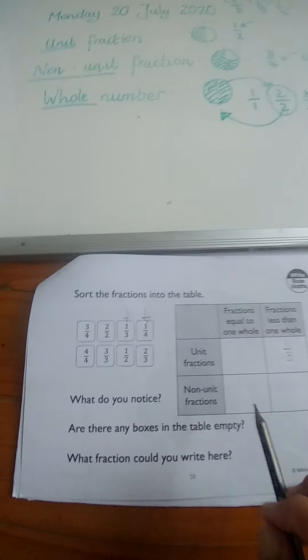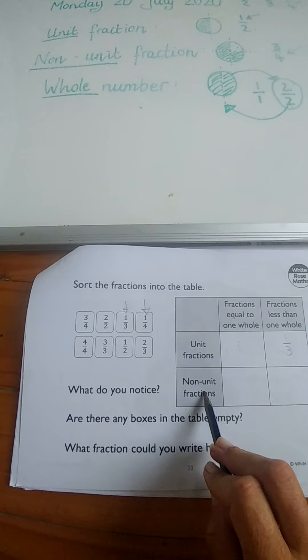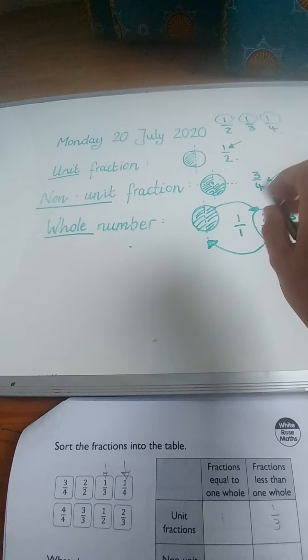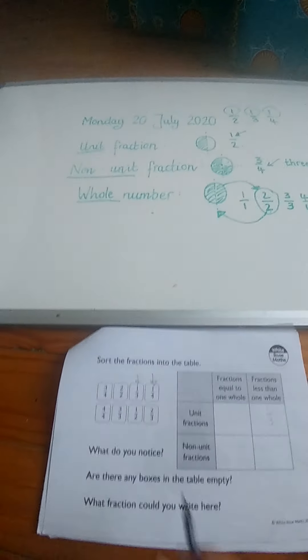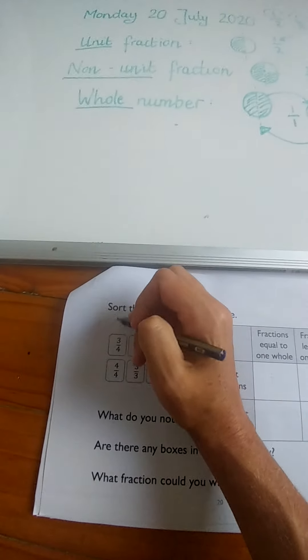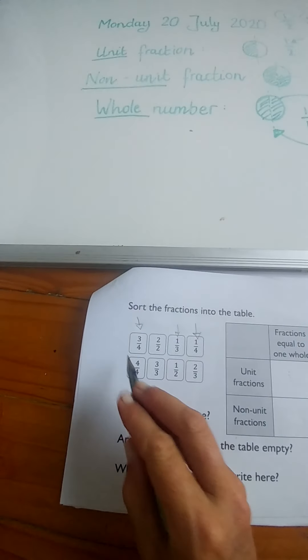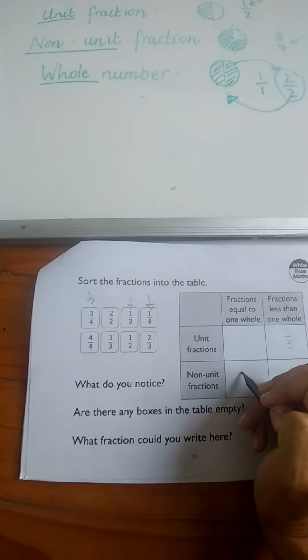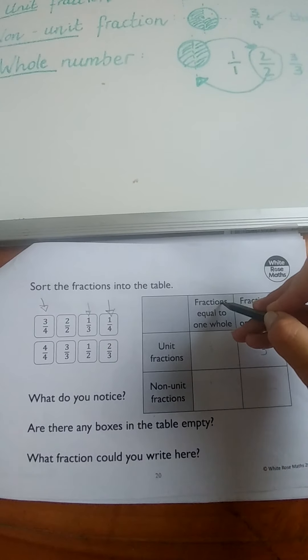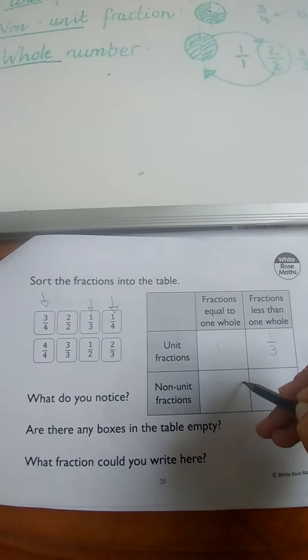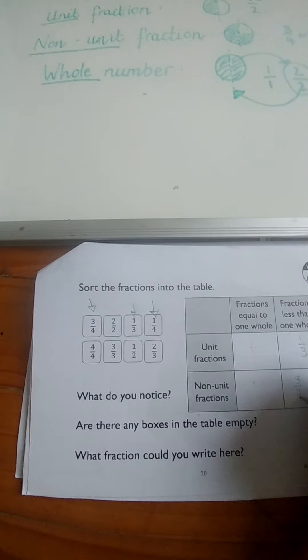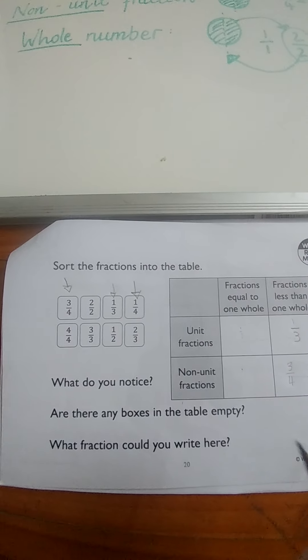Then we're going to see non-unit fractions. Well a non-unit fraction we said here is anything that doesn't have a one at the top, so something like a three at the top. Let's see, well it could be this one definitely. Three over four. That's the same as our one, so we know that it's here. And then it says, so now we're working this way, so it's a non-unit fraction but is it a fraction equal to one whole? Well no, we know three-quarters is not a whole, so it would have to be here. Correct.